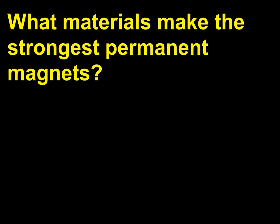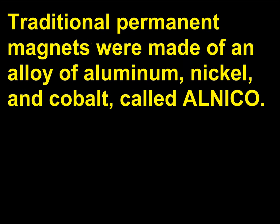What materials make the strongest permanent magnets? Traditional permanent magnets were made of an alloy of aluminum, nickel, and cobalt, called alnico.